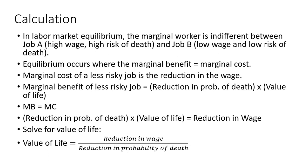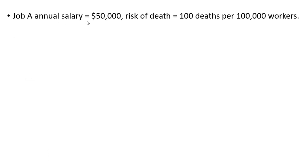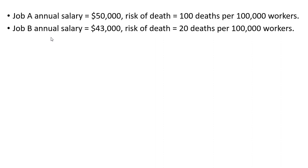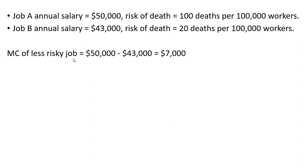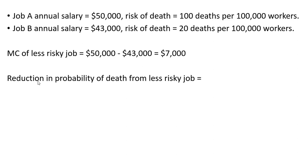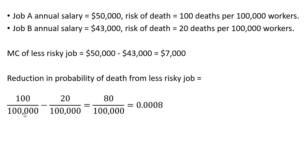Let's do an example. Job A has an annual salary of $50,000 and a risk of death of 100 deaths per 100,000 workers. Job B's annual salary is $43,000 with a lower risk of death — 20 deaths per 100,000 workers on average. The marginal cost of a less risky job is going to be $7,000, the pay cut from taking a less risky job. The reduction in the probability of death: 100 divided by 100,000 minus 20 divided by 100,000 gives us 0.0008.